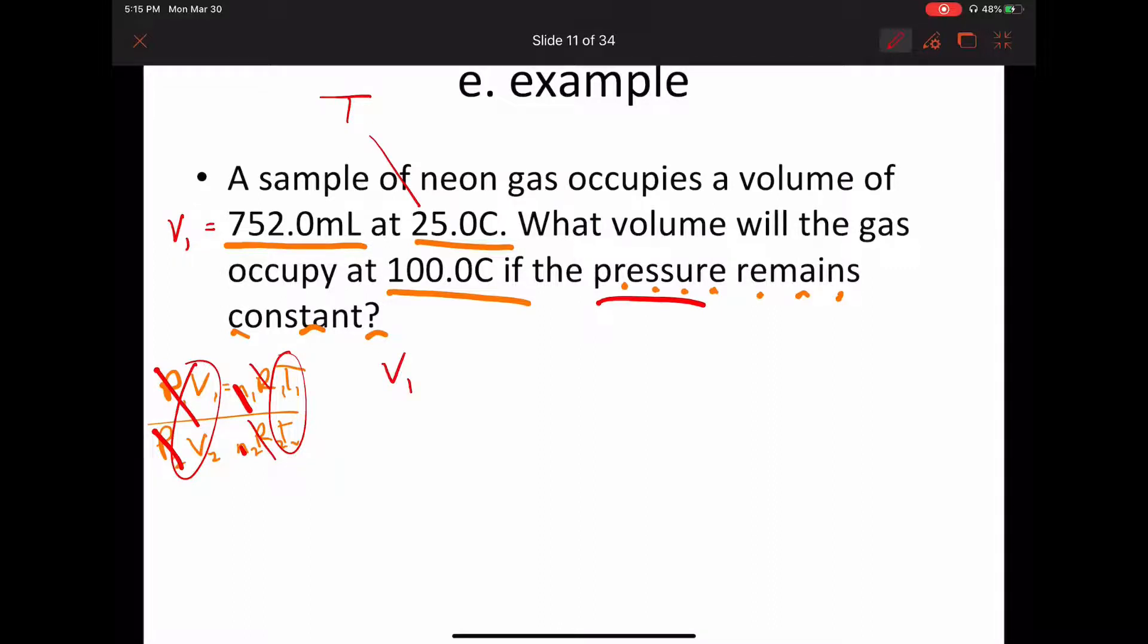We have V1 over V2 equals T1 over T2. Now, like I said, you can memorize it like that. If you Google it online, you may see some other versions of this, but again, it's kind of all the same. So now we have this equation here.